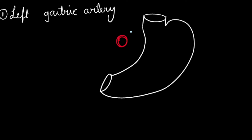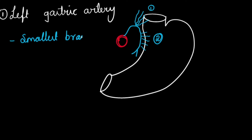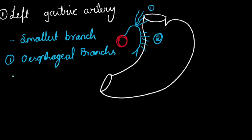The left gastric artery is one of the smallest branches of the celiac trunk. It runs upwards and to the left behind the lesser sac, then runs along the lesser curvature of the stomach, where it ends up anastomosing with the right gastric artery. It gives two to three branches to the esophagus at the cardiac end of the stomach, and also gives gastric branches to the lesser curvature.